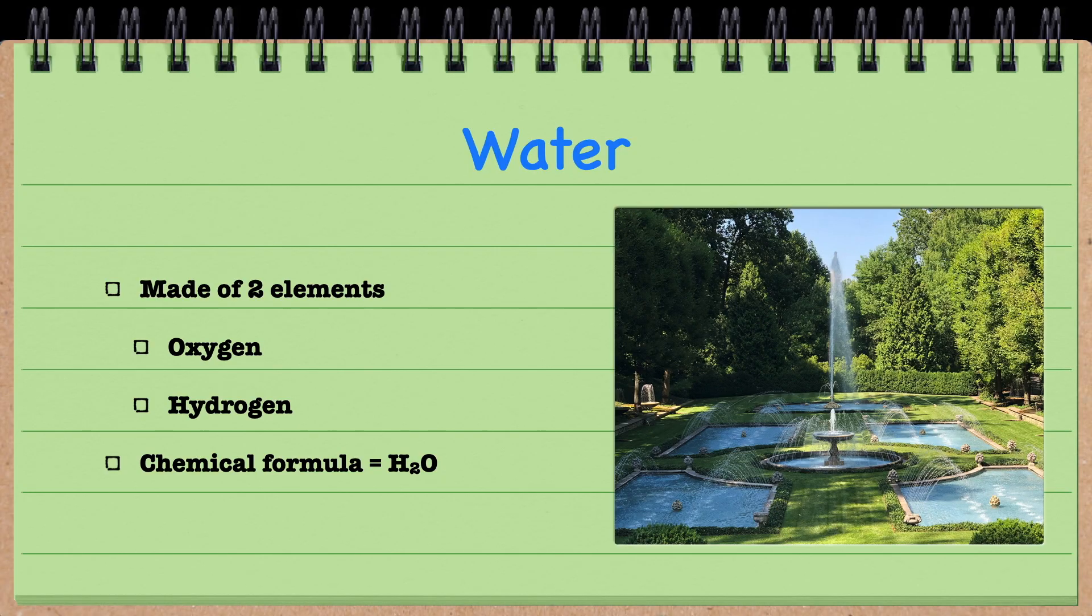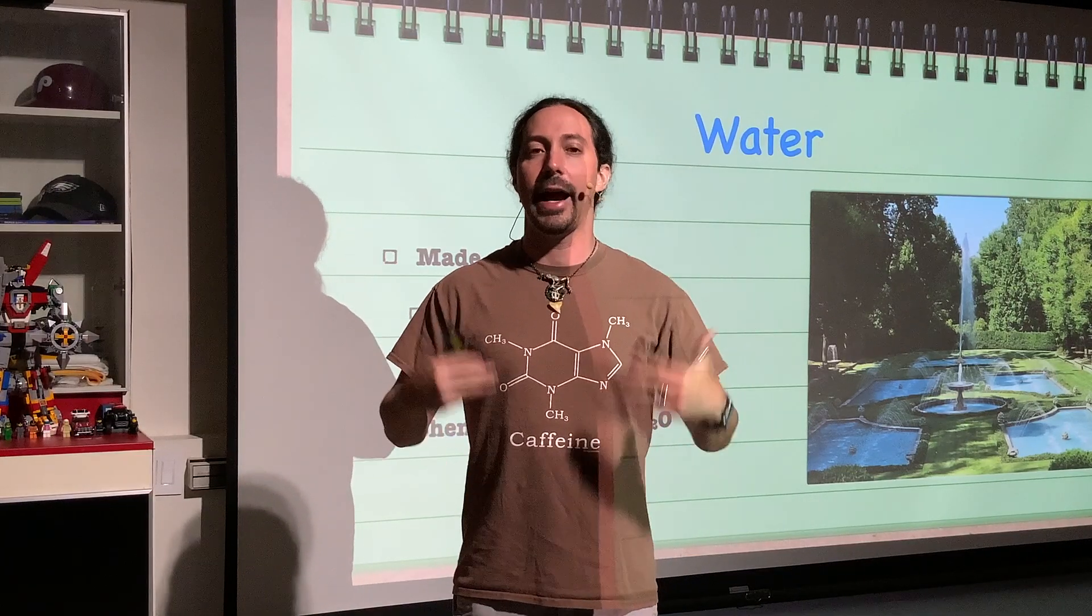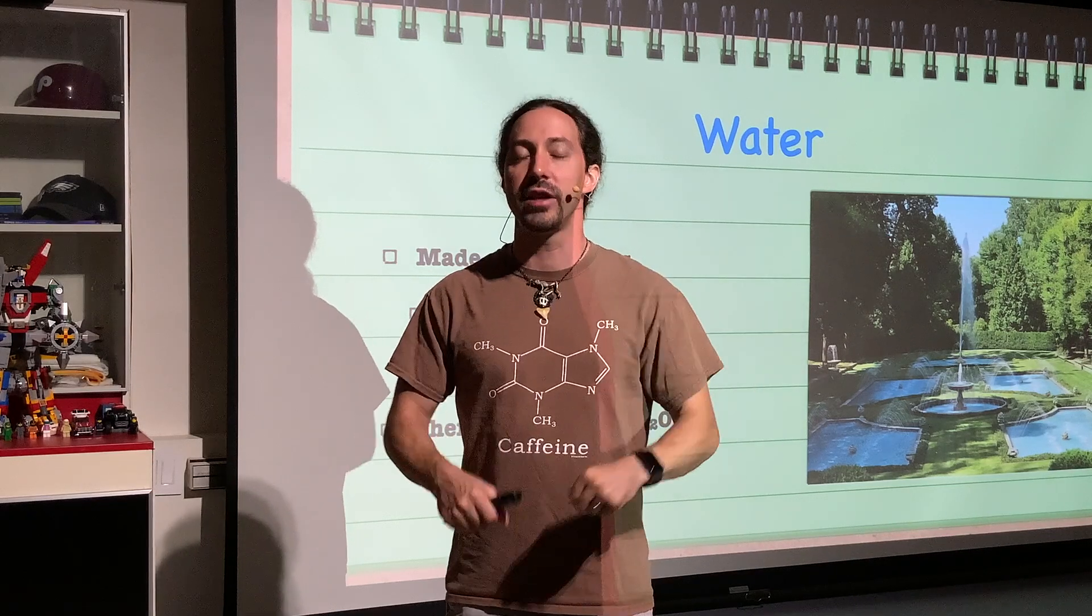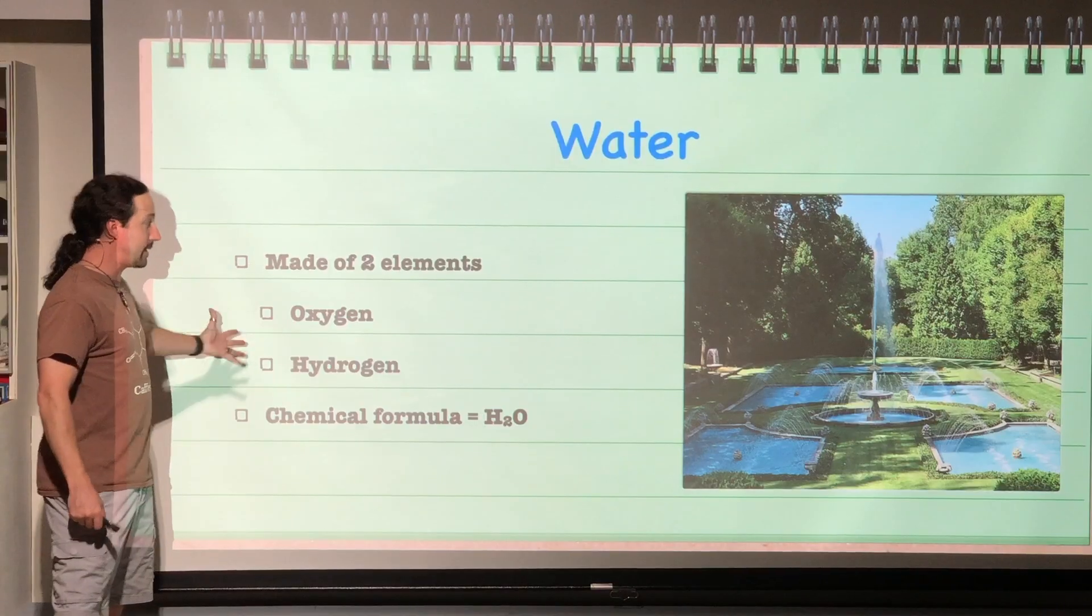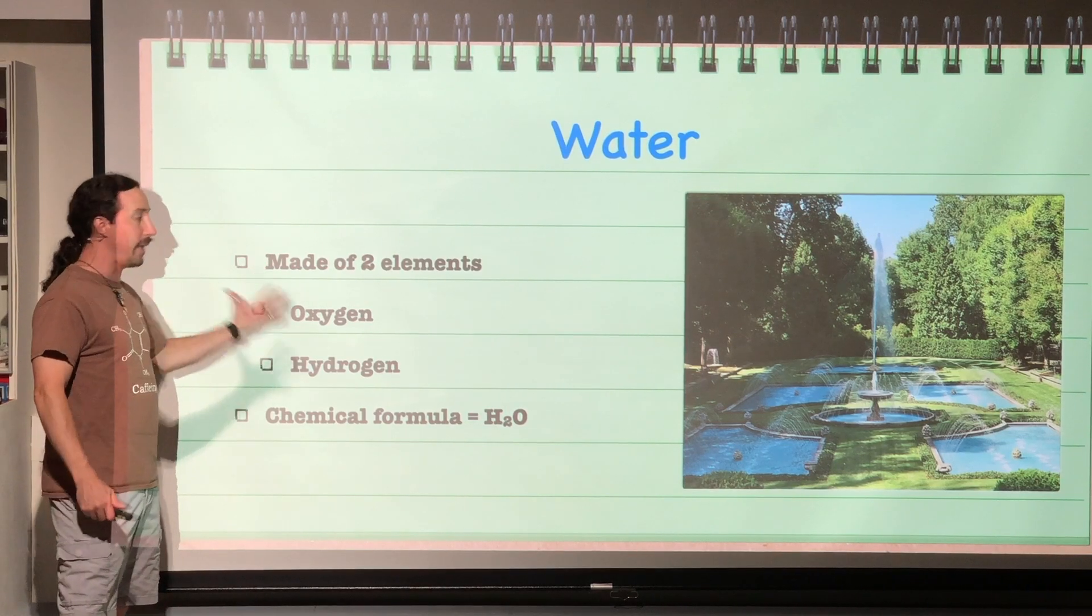So water, as I said before, it's only made of two elements. It's only made up of hydrogen and oxygen. Again, H2O, two hydrogens and one oxygen. And that's it. That's the entirety of what makes up water.